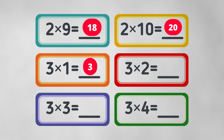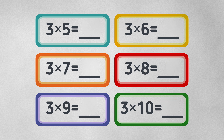3 times 2 equals 6. 3 times 3 equals 9. 3 times 4 equals 12. 3 times 5 equals 15. 3 times 6 equals 18.